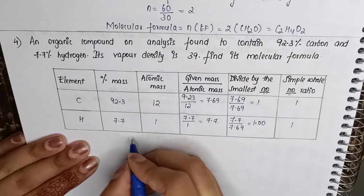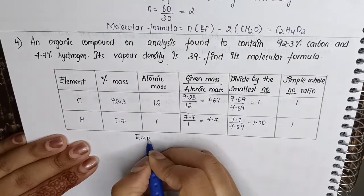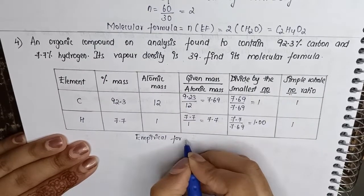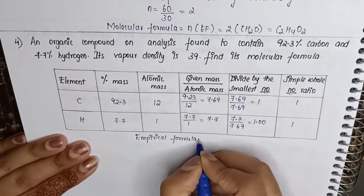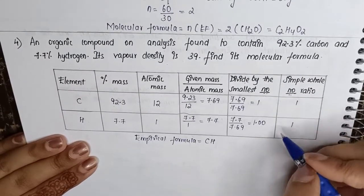Now when we write down its empirical formula, empirical formula is equal to CH, because the ratio here is 1 is to 1.